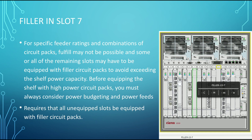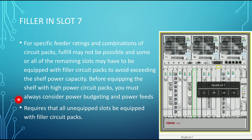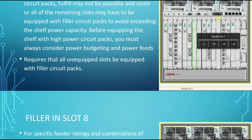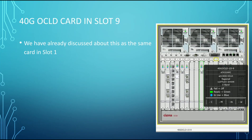Filler cards are placed in slots 7 and 8. For a specific feeder rating and combination of circuit packs, it may not be possible to fill all slots with functional cards, so remaining slots must be equipped with filler circuit packs to avoid exceeding the shelf power capacity. Before equipping the shelf with high-power circuit packs, always consider power budgeting and power feeds. All unequipped slots must be filled with filler cards. Slot 9 also contains a 40G OCLD card, the same as in slot 1.